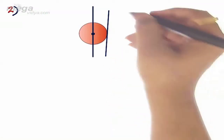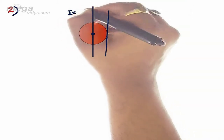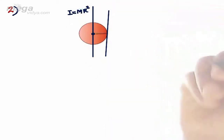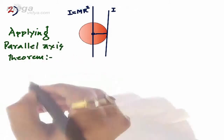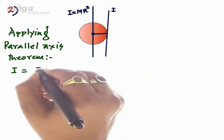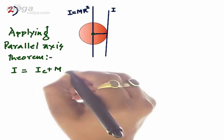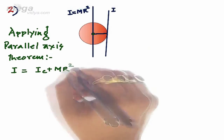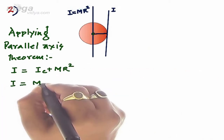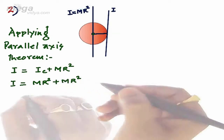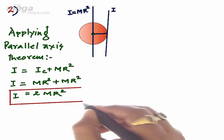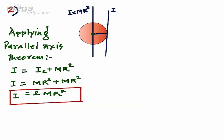We can take another example. Let us consider a ring whose moment of inertia along the centroidal axis is MR², where R is the radius of the ring. We are required to find the moment of inertia along the axis passing through the tangent and parallel to the centroidal axis. Applying parallel axis theorem, I = Ic + MR² = MR² + MR² = 2MR². So the moment of inertia of a ring along the tangent parallel to the centroidal axis is 2MR².